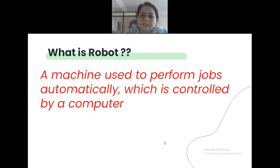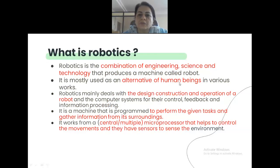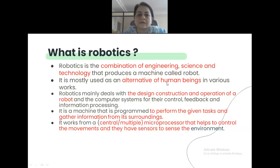A robot is a machine that performs jobs automatically, controlled by a computer. Robotics is a field of engineering, science, and technology. Robots are an alternative to human beings — not replacing them, but alternative. Robots do all things they are programmed to do. They can never be more intelligent than human beings, but they can do some work more efficiently because they are machines.